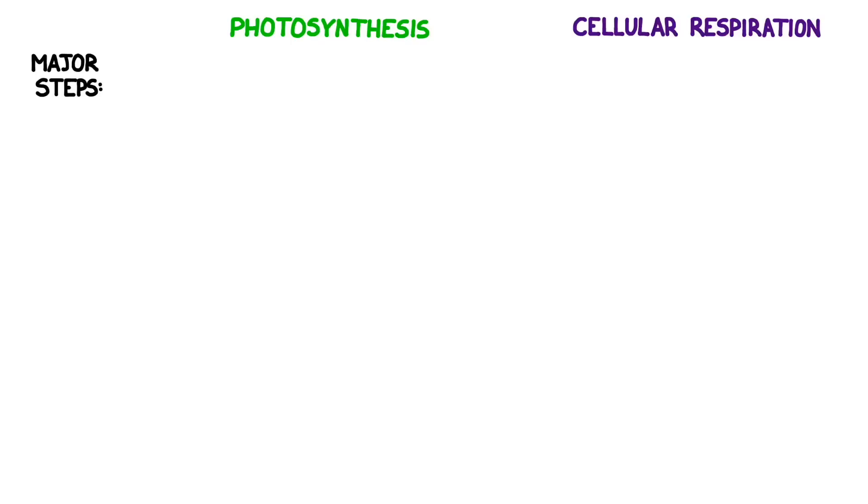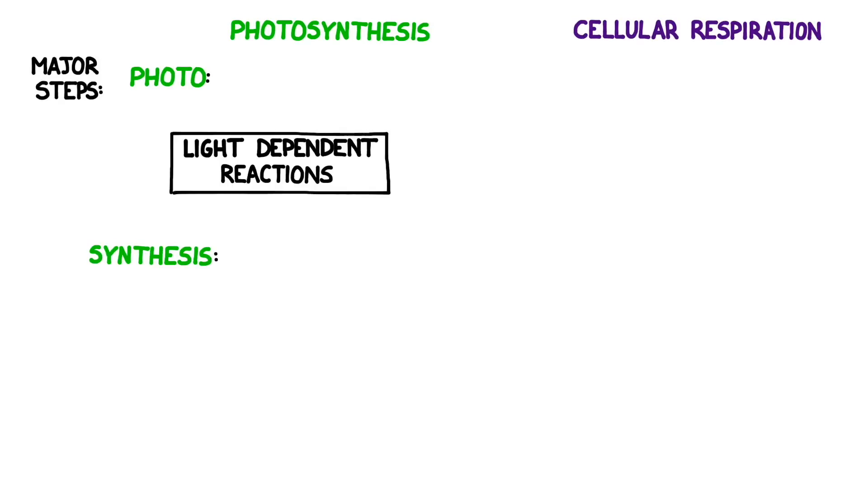To finish up we're going to go over the major steps in each process. We'll start by splitting up photosynthesis into the photo part and the synthesis part. The photo part is going to encompass the light dependent reactions and the synthesis part is going to be the light independent reactions also known as the Calvin cycle.